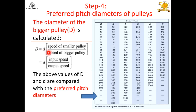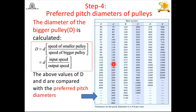Step 4: Once the small pitch diameter d is known from the belt section, we find the speed ratio — input speed divided by output speed — as given in the problem statement. Using this expression we calculate the larger pulley diameter D. We then refer to the preferred pitch diameter chart for the selected section and choose the nearest standard value of D.